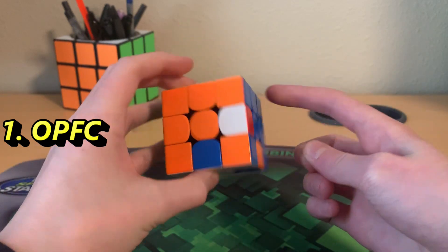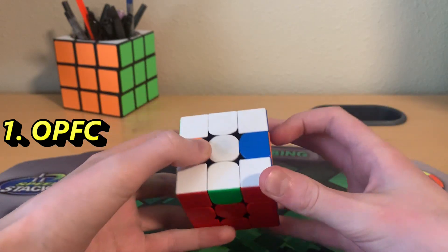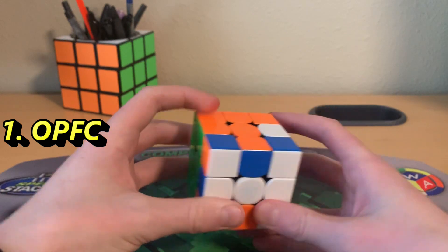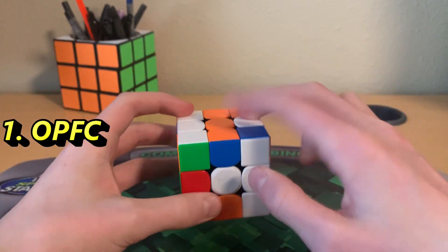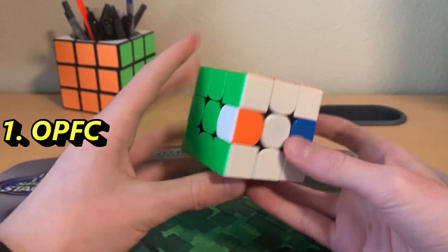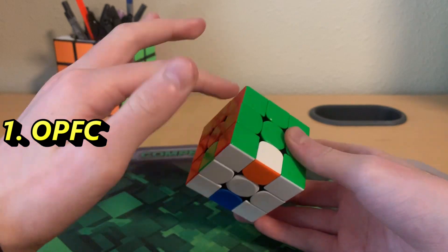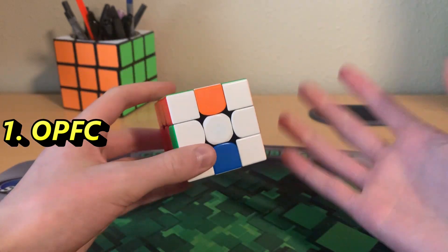Okay, so this is our last F2L pair. So I'm going to move it so that I can U-perm it, but then this piece will get messed up. So I put in garbage piece, U-perm to solve it, undo, undo. And now we've solved OLL, PLL, and F2L.